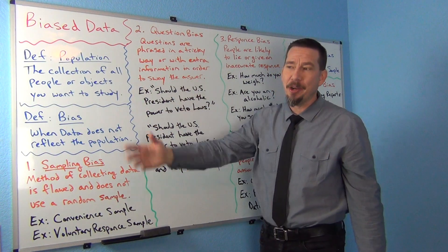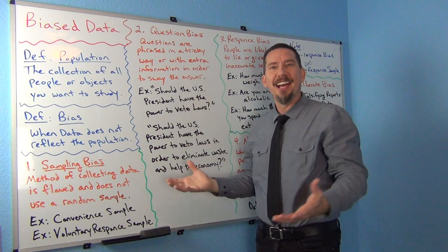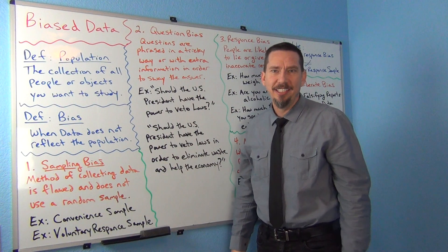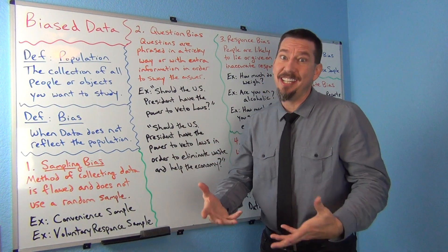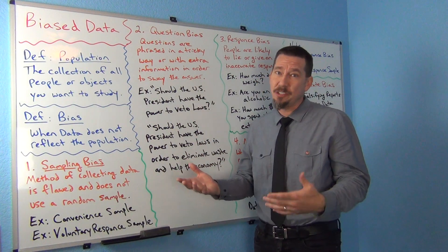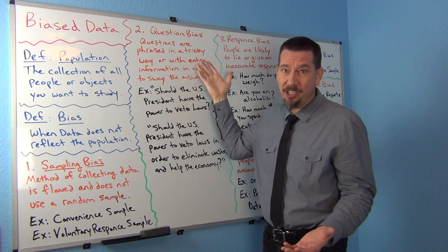So then you come up online and say, my business is one of the best businesses out there because a high percentage of people think my business is really, really good. No. You just phrased the question in a tricky way to force people to answer that. So you could have a census or a simple random sample, but if you have question bias, your data is not going to reflect the population.